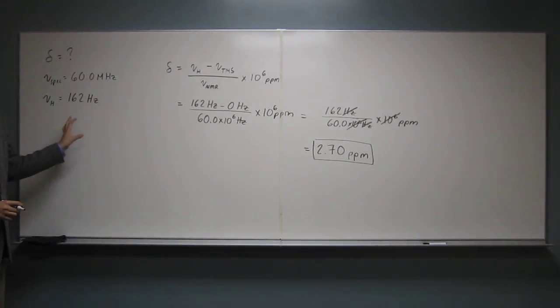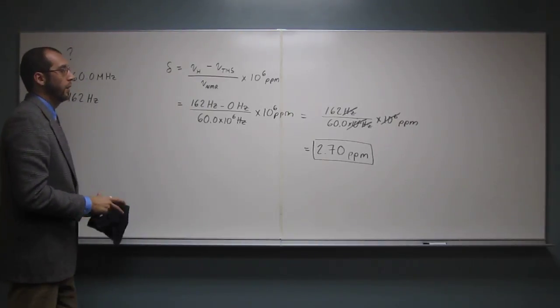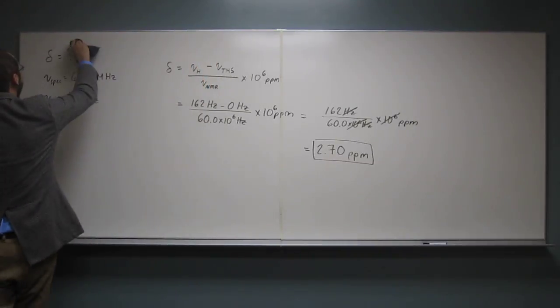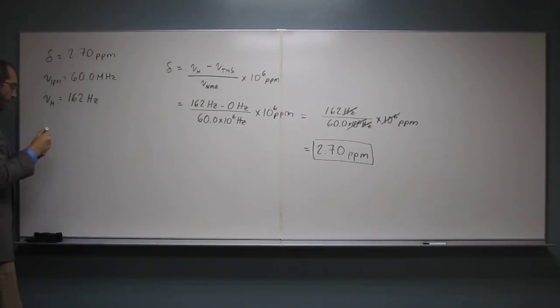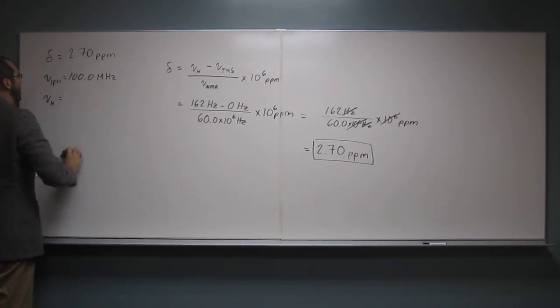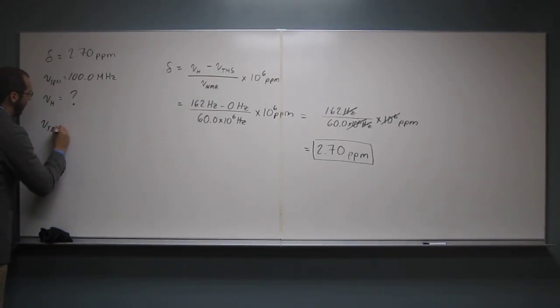So that's how we figure out what's the delta value here. Now it wants us to know what's the number of hertz that the proton has shifted if we have it on a 100 megahertz NMR. So remember, the delta value doesn't change. So we have that up here now. So let's write that in, 2.70 PPM. And it also said that our NMR no longer is a 60 megahertz NMR, but a 100 megahertz NMR. And now what we're looking for is the value of the proton. And remember, we know the frequency of TMS is zero hertz. Because that's our standard.